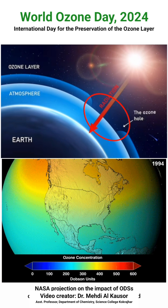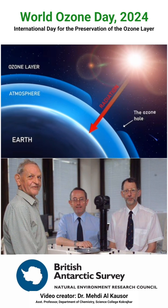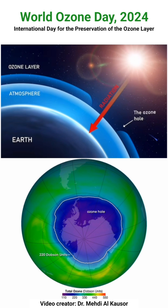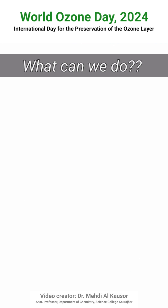The ozone hole refers to the area or region where the density or concentration of ozone is decreasing day by day. The ozone hole was first noticed in 1985 by British scientists Joe Farman, Brian Gardiner, and Jonathan Shanklin at the Antarctic region. They reported a large and unexpected decrease in ozone levels over Antarctica. The largest ozone holes on record were noticed in the years 2000 and 2006, measuring over three and a half times the size of Australia.